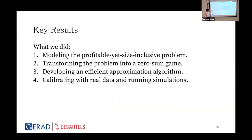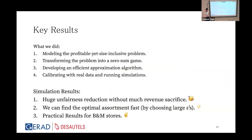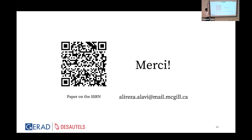In summary, we modeled the profitable yet size-inclusive assortment problem, transformed it into a zero-sum game, introduced both exact and approximate solutions, and calibrated with real data via simulations. Key findings: we can achieve large drops in unfairness with small revenue dents; we can run fast using large epsilons; and the approach is practical for brick-and-mortar stores as well. Thank you — questions are welcome.